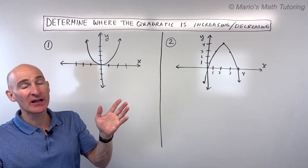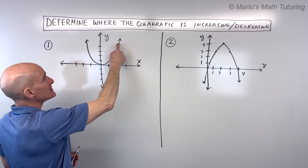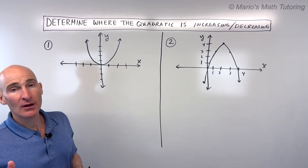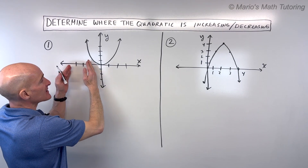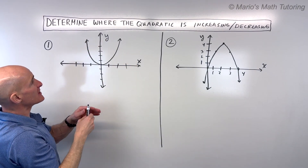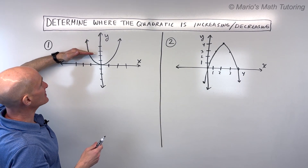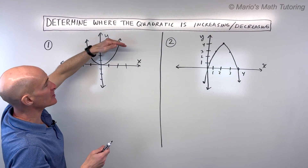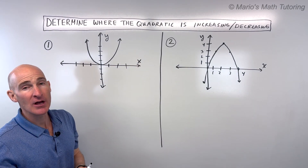Here's where students sometimes make a little bit of a mistake. They say, isn't it decreasing here? I can see it's going down. But you want to think about working from left to right. So as x increases, what's happening to the y-values? Think of the y-value as like the height — the height is actually going down, it's decreasing. And over here, it's increasing. You have to think about as you're moving from left to right on the graph.